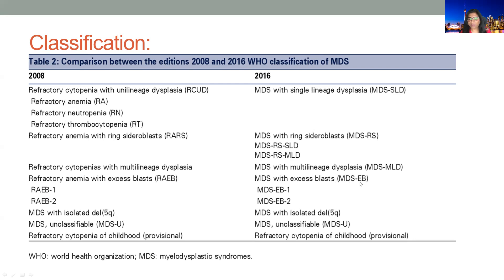The next category is MDS with excess blasts. Based on the number of blasts in the peripheral blood film and in the bone marrow, we categorize them into two categories: EB1 and EB2. Then there is MDS with isolated deletion 5q. If we cannot apply any of the above categories, then we say it is unclassifiable — MDS-U. There is also refractory cytopenia of childhood, which is a provisional category in the WHO classification.